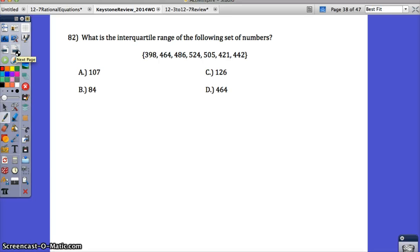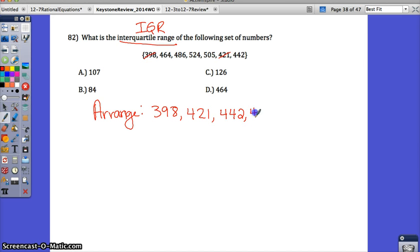Number 82, what is the interquartile range of the following set of numbers? In order to find the interquartile range, or IQR, you need to find the median first, which means we need to arrange the data. So let's put it in order from least to greatest. The smallest number I see is 398, then 421, then 442, 464, 486, 505, and 524. To find the median, we find the middle. So I like to count in from both sides. The middle term is 464. That is your median, or your Q2.